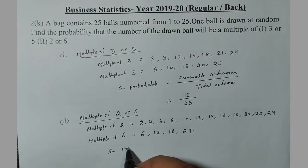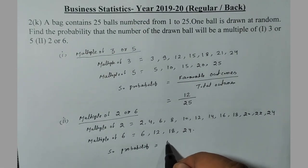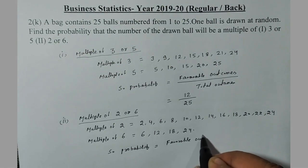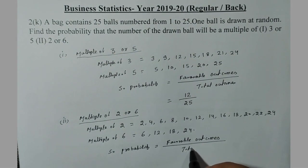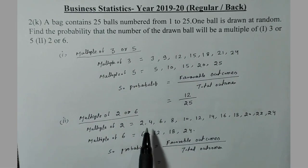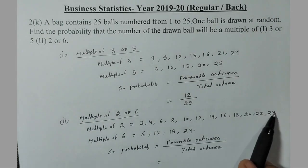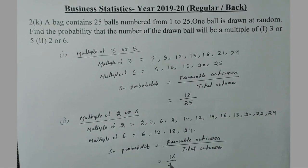So the probability equals favourable outcomes divided by total outcomes. Now counting the favourable outcomes for multiples of 2 or 6 — since multiples of 6 are already included in multiples of 2, the unique favourable outcomes total 12. Wait — counting gives us 16 favourable outcomes. So the probability is 16 divided by 25.